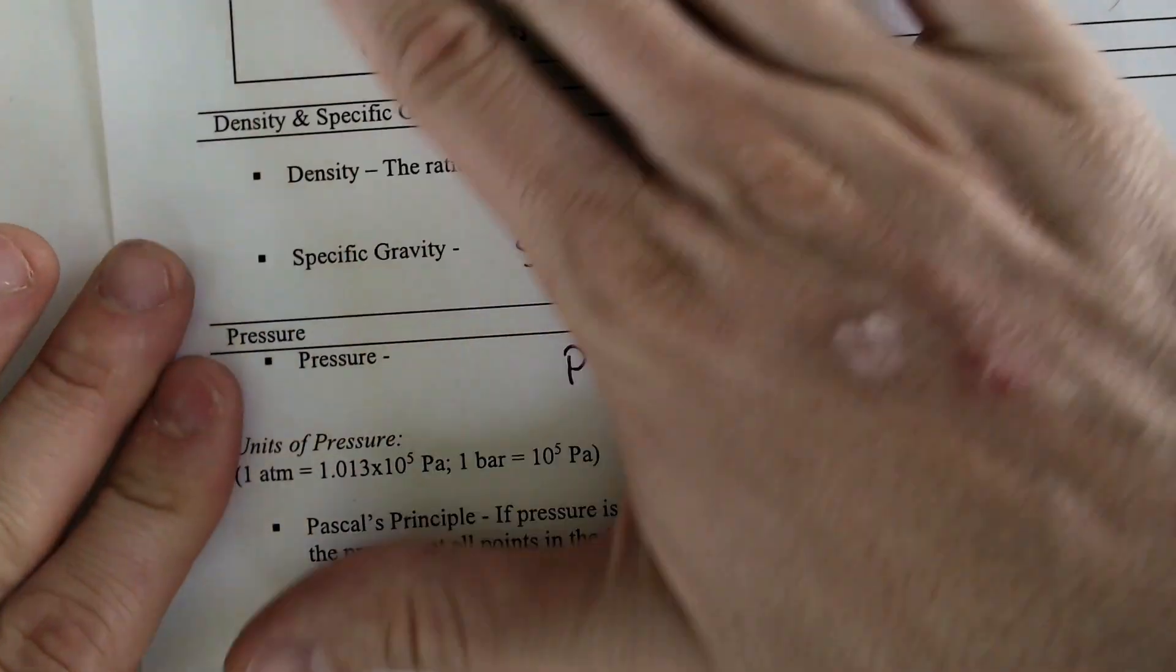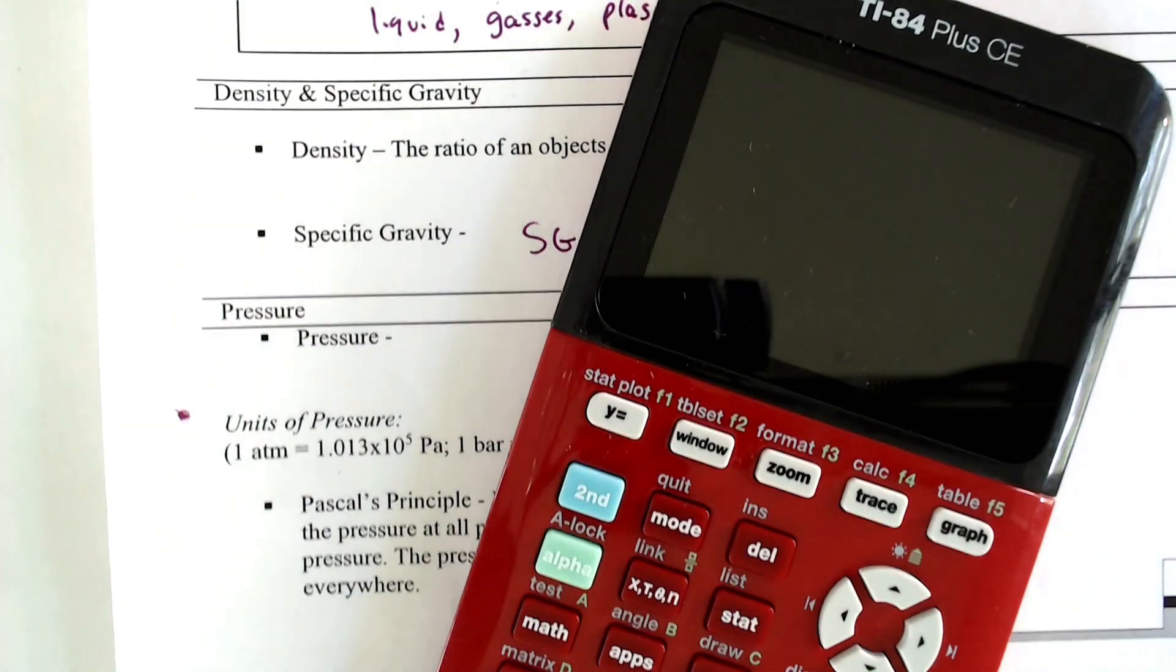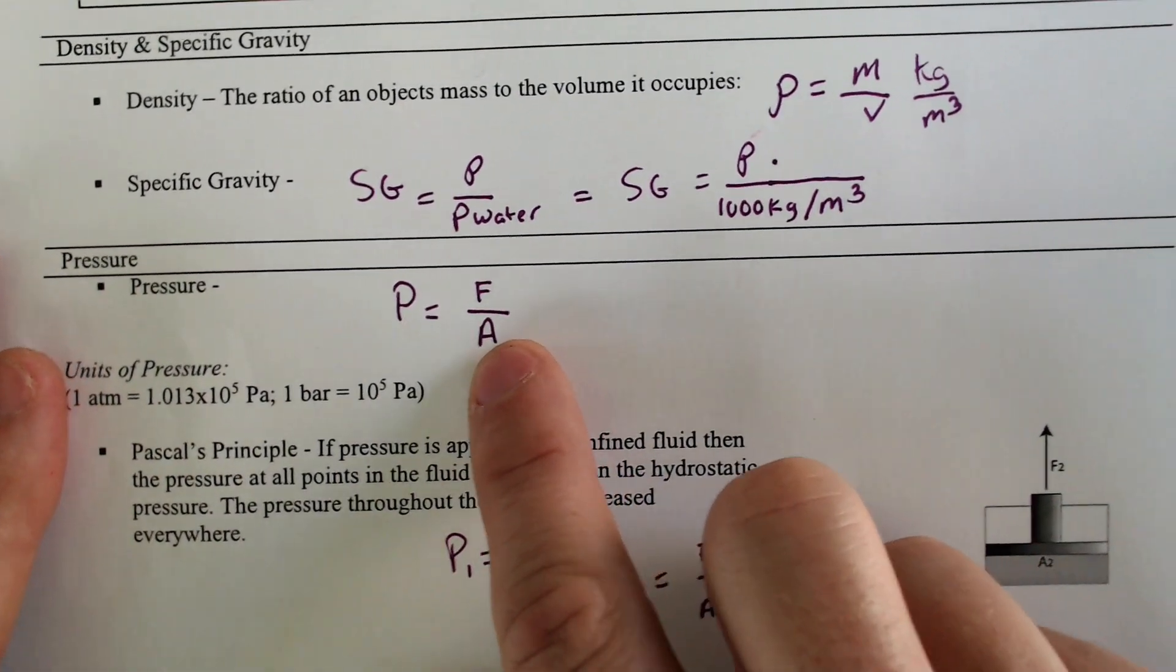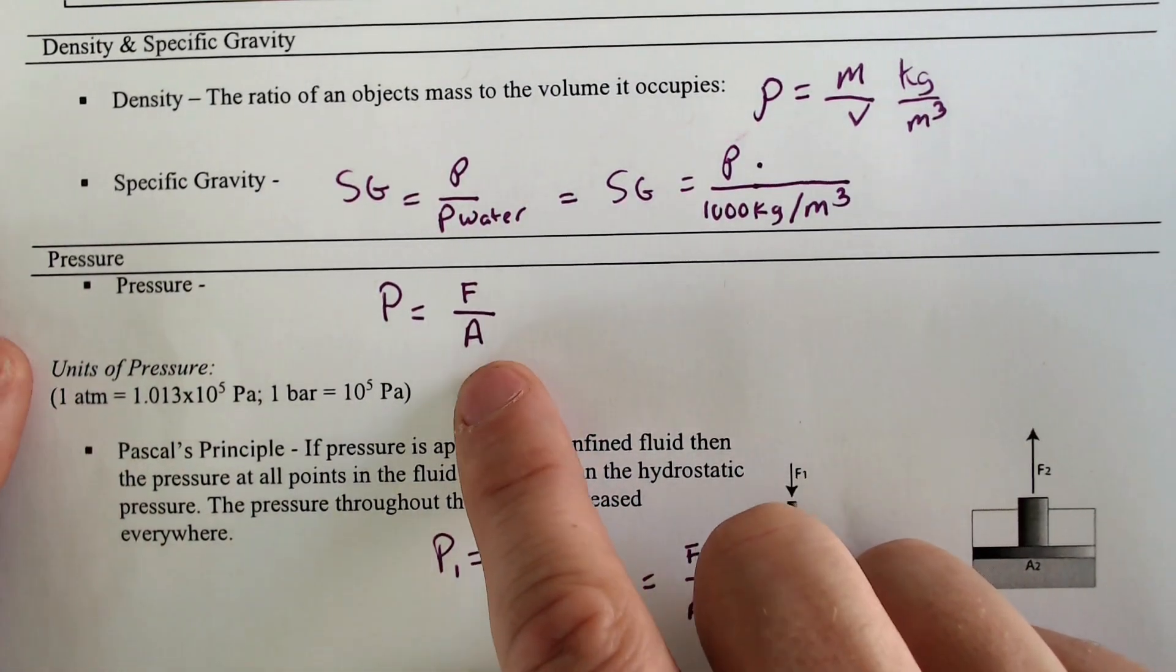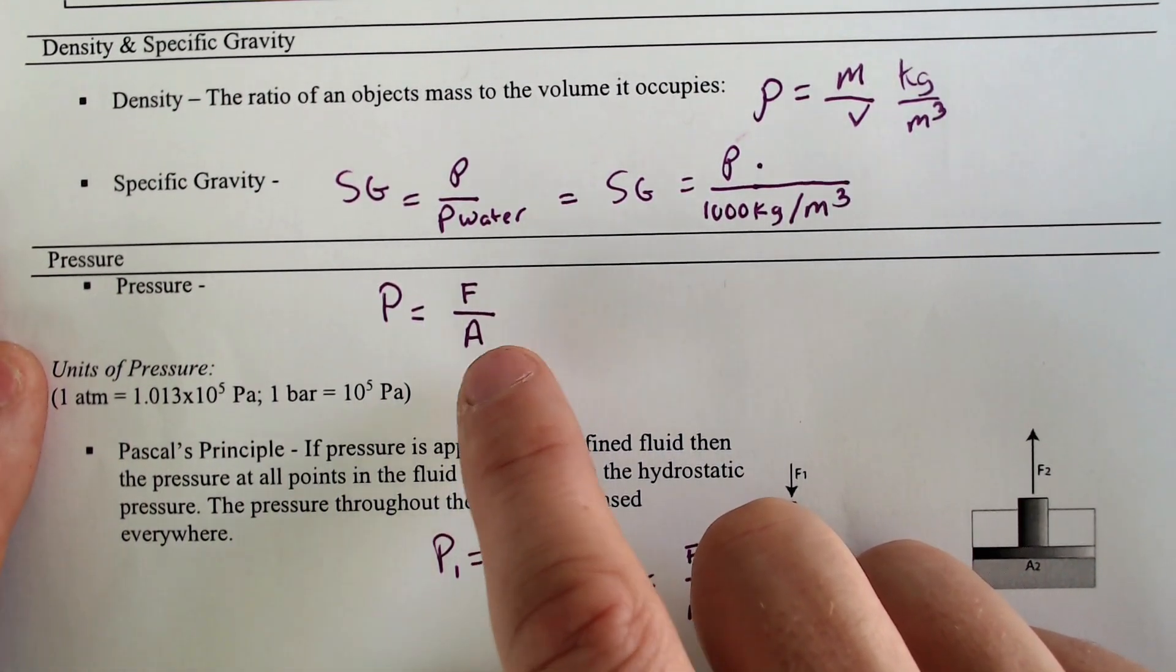It's going through it with very little effort. Whereas if I were to take something that was bigger, an area that was bigger like this calculator, that would be difficult to get to go through the paper because it's got a bigger area. And if you divide by a bigger number, that means that you are going to have less pressure.